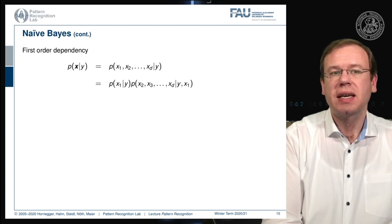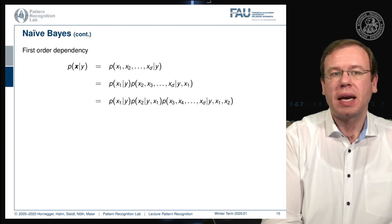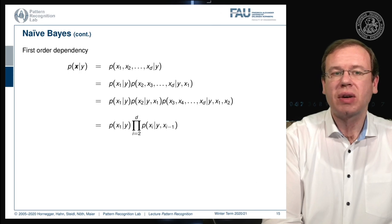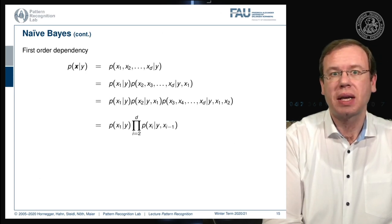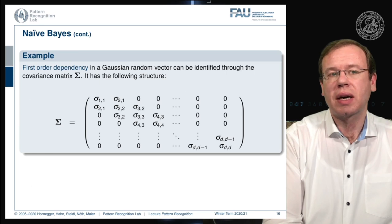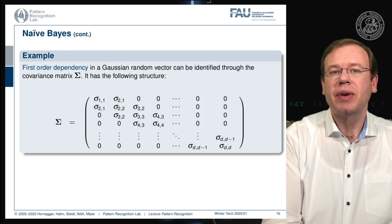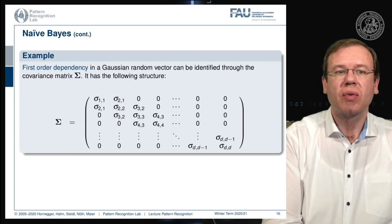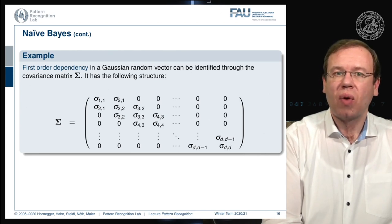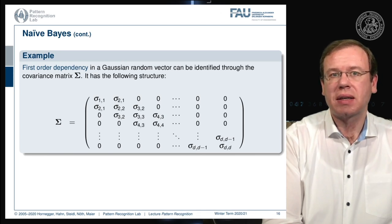Introducing a first-order dependency means we write the probability as a product where each dimension depends only on its neighboring dimension — not fully dependent, but dependent on the neighbor. If we apply this to a Gaussian, we get a covariance matrix with a banded structure: we have the diagonal as in Naive Bayes, plus one off-diagonal element that is also estimated. This introduces a slight degree of mutual dependence modeled by the first-order dependency.